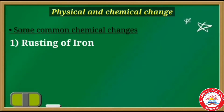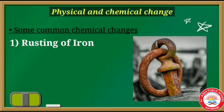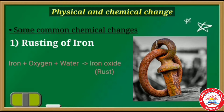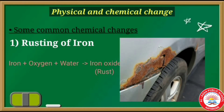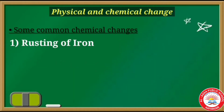First we can discuss rusting of iron. This is one change that affects iron articles and slowly destroys them. Since iron is used in making bridges, ships, cars, truck bodies, and many other articles, the monetary loss due to rusting is huge. For rusting, iron reacts with oxygen and water and forms a new substance — iron oxide — which is known as rust.